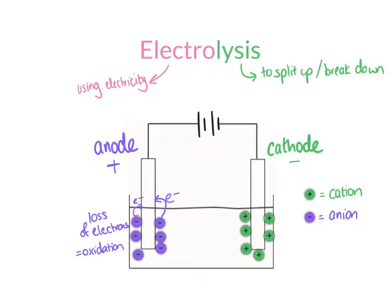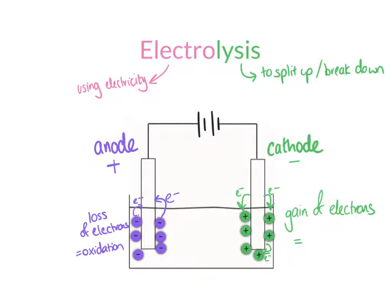At the cathode, something different happens. We have cations there. They are positive because they have a lack of electrons. So at the cathode, the cations gain electrons — gain of electrons is reduction. Think OIL RIG: oxidation is loss, reduction is gain. The cations pick up electrons, become atoms with no overall charge, and fall away from the cathode. Generally a metal is formed at the cathode, appearing as beads of shiny grey metal.